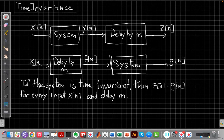So for a time invariant system, for every possible input I choose x[n], and every possible delay m I choose, these two outputs would be the same. So it's sort of like a commutative property for delay in the system. If that holds, the system is time invariant. If it only holds for some inputs or some delays, then it's not time invariant.